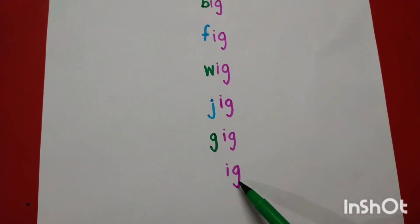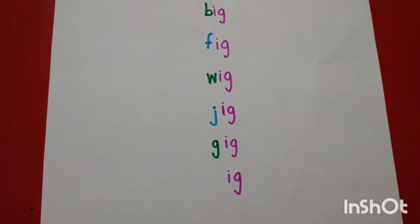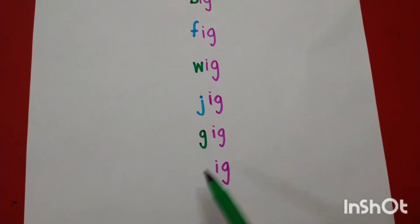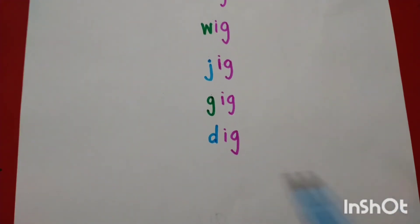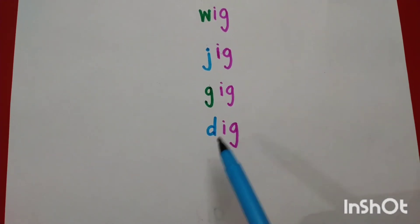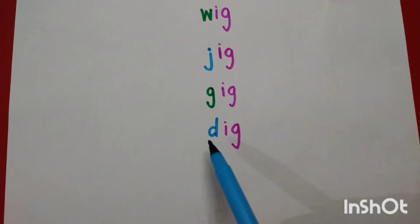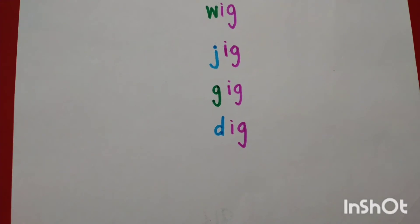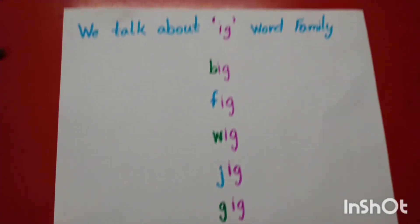Ig ki friendship letter D se karayenge. Right here letter D. Speak the sound of letter D. D, Ig, Dig. Done. Now repeat again.